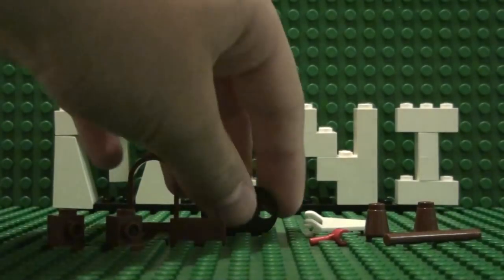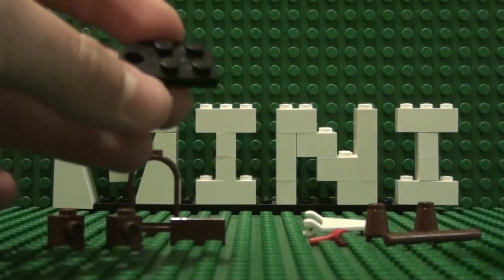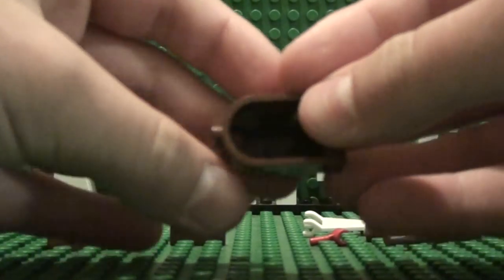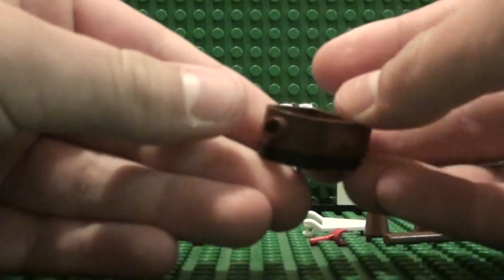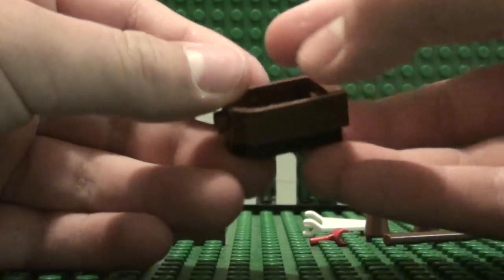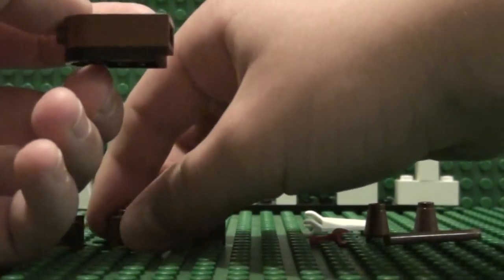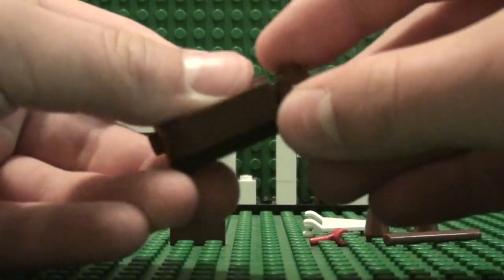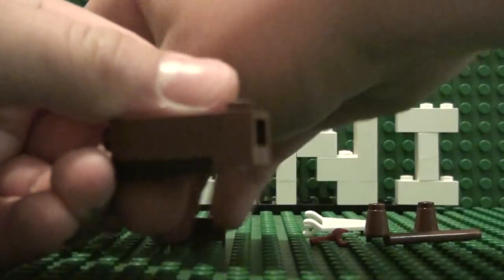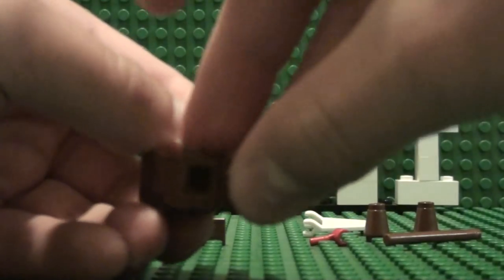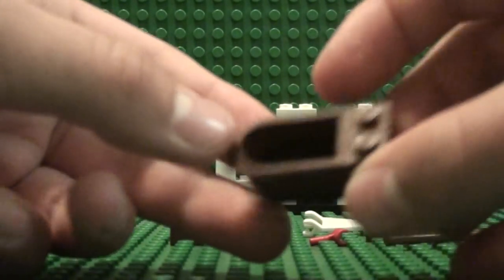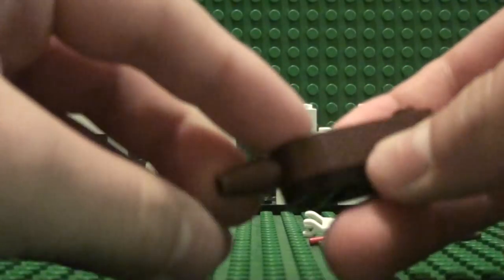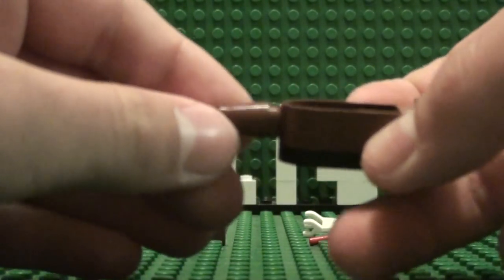First, take your 2x2 plate with half circle extension and your window piece and clip them together. Now take your two 1x1 bricks with studs on the side and place them here and here. Take one of your cone pieces and place it on top.